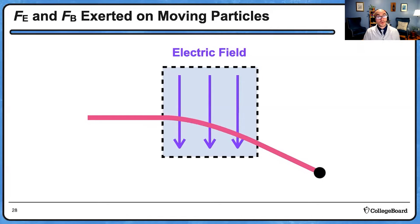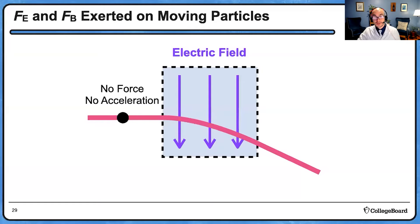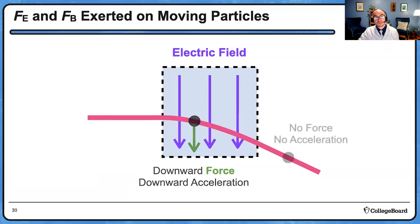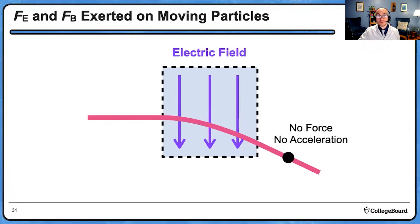Here's how I drew the path. There are three important pieces: before, during, and after. Before entering the field, there was no force and no acceleration — constant velocity. Inside the field, the electric field exerts a downward force on the positively charged object in the direction of the field, causing it to curve downward. Once the particle leaves the field region, there's no force again, so it travels in a straight line. The path only curves within the region of electric field.